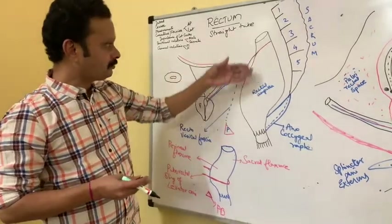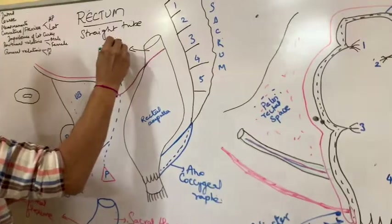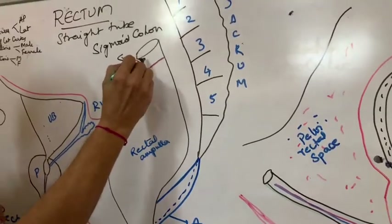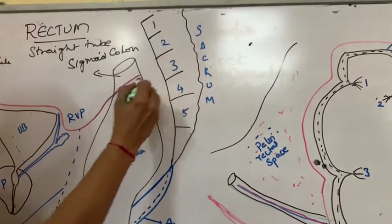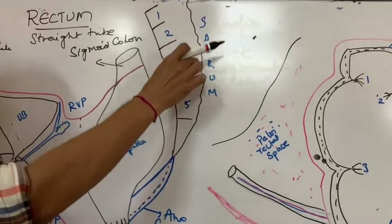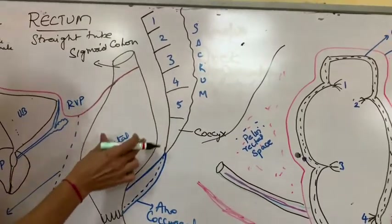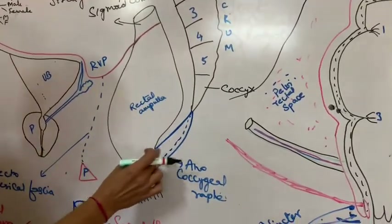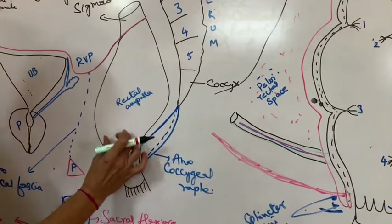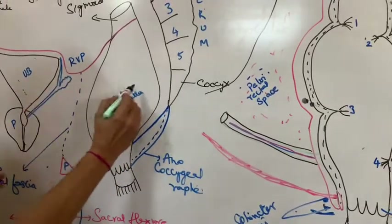If you see its course, the rectum extends as a continuation of the sigmoid colon in front of the third sacral vertebra. It begins and descends downwards along the sacrococcygeal curve. On reaching the tip of the coccyx, it abruptly becomes narrower and becomes continuous with the anal canal at the anorectal junction. The dilated part of the rectum is called the rectal ampulla.